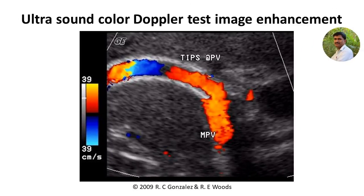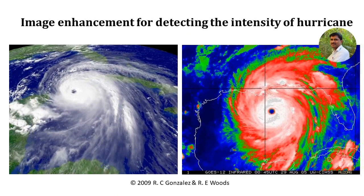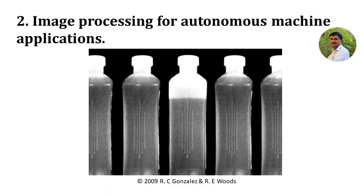This is an ultrasound color Doppler test image. The radiologist can find the direction and velocity of the blood in the vein by using these images. This will help them to identify blood clots in the veins. There are techniques in image processing that can detect the intensity of a hurricane. Another similar method used in weather forecasting is image enhancement for detecting the intensity of a hurricane. The first image shown here is an input image, and the image processing algorithm enhances the pictorial information to determine the intensity of the hurricane.